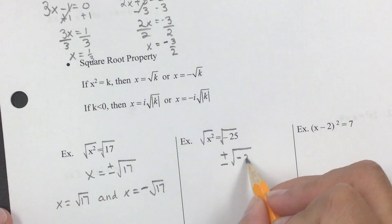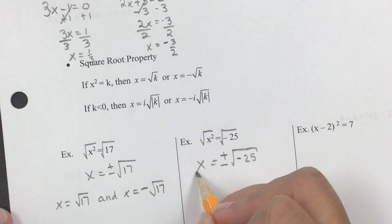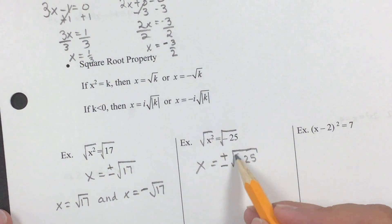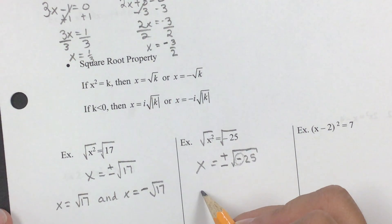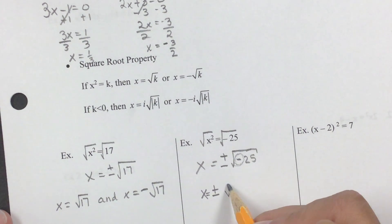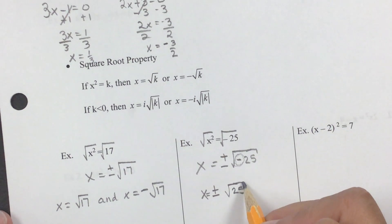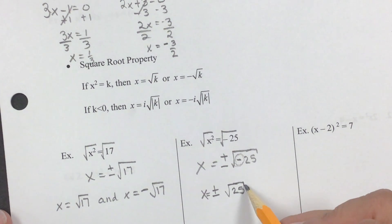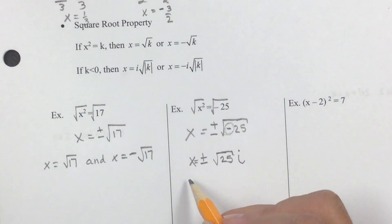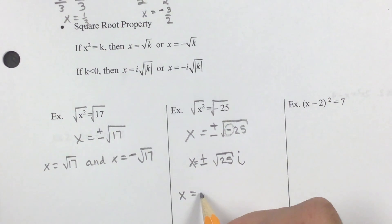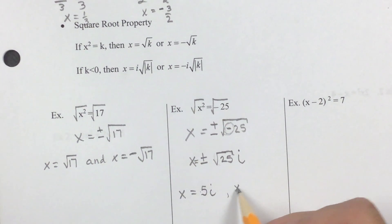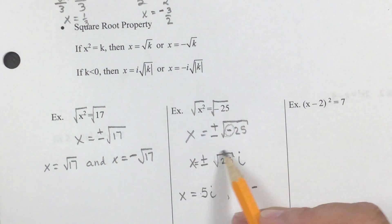If we had a negative 25 equal to x, these are opposite operations so they undo each other. Don't forget that once you have a negative inside the radical, we have to pull out an i. So it's x equals plus or minus the square root of 25 times i — the i is actually outside of the radical symbol. That means your answers are x equals positive 5i and x equals negative 5i.